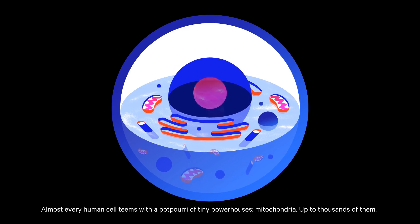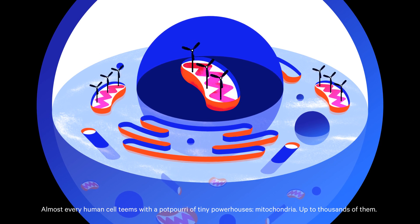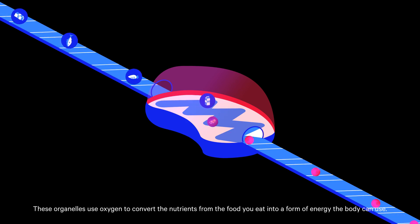Almost every human cell teems with a potpourri of tiny powerhouses, mitochondria, up to thousands of them. These organelles use oxygen to convert the nutrients from the food you eat into a form of energy the body can use.